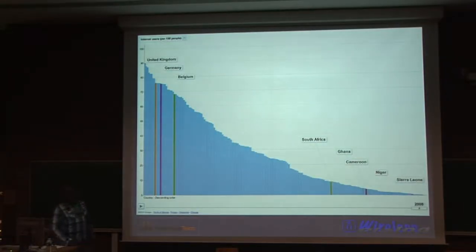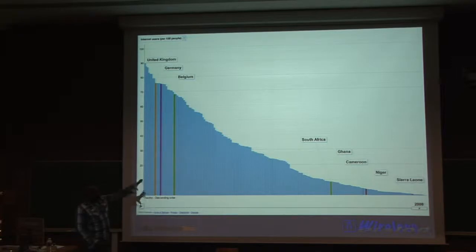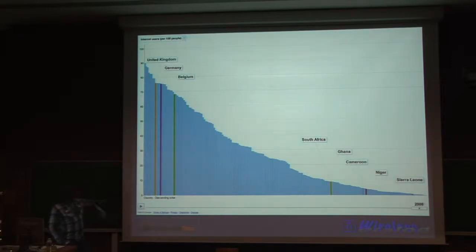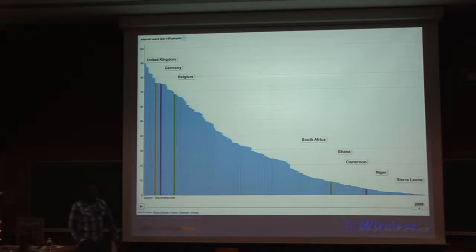This graph shows the amount of internet users in Africa — Wireless Dialog is basically trying to encourage internet usage. As you can see, 70–80% of the population are not connected, and we're talking about less than 10% of the population having access.